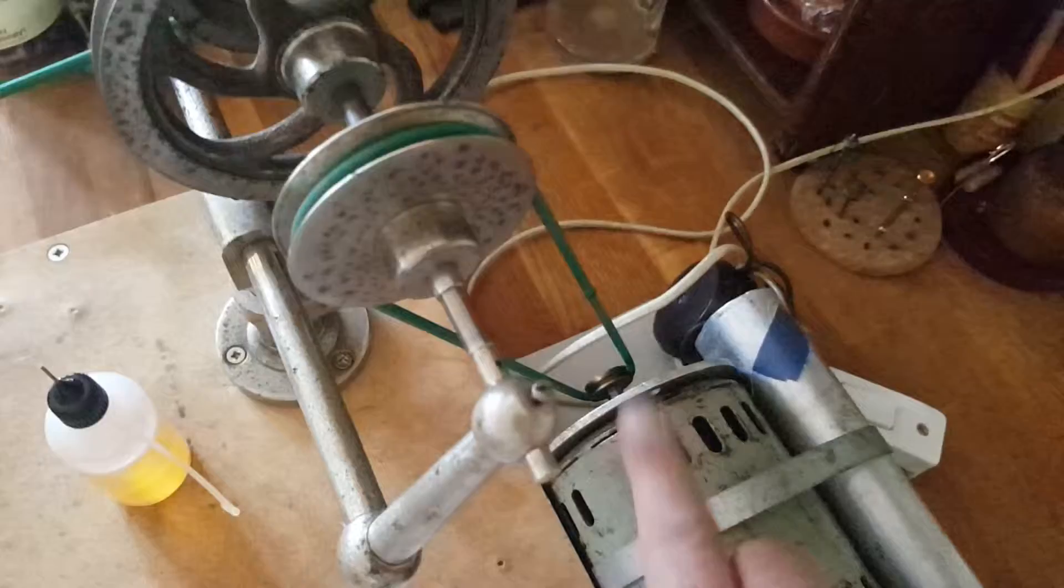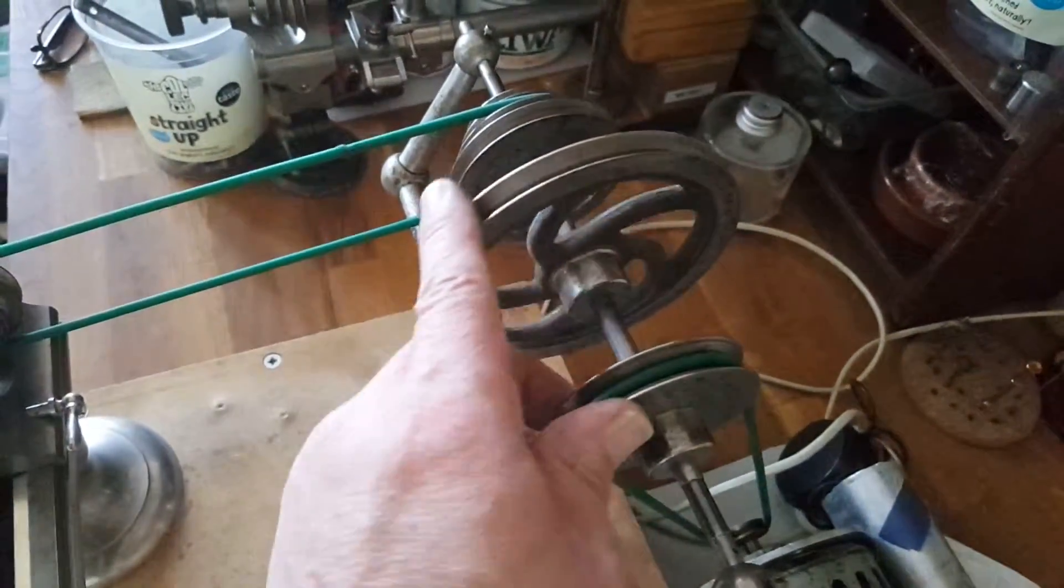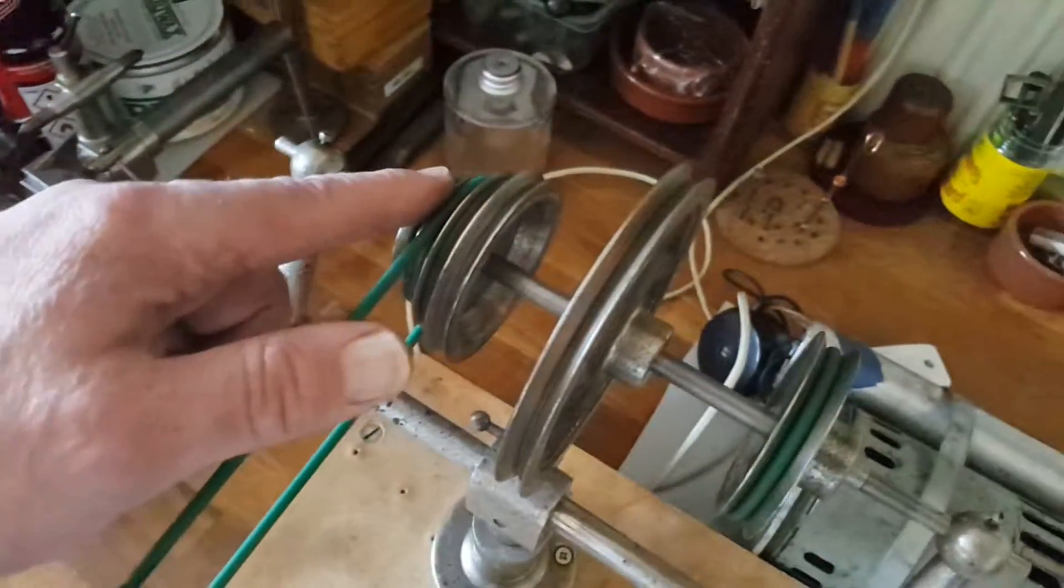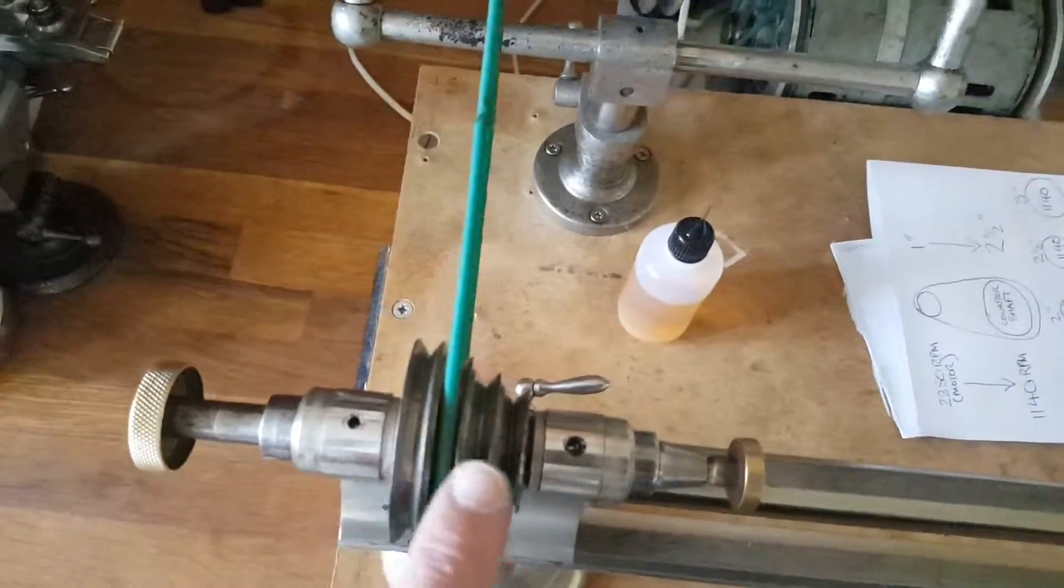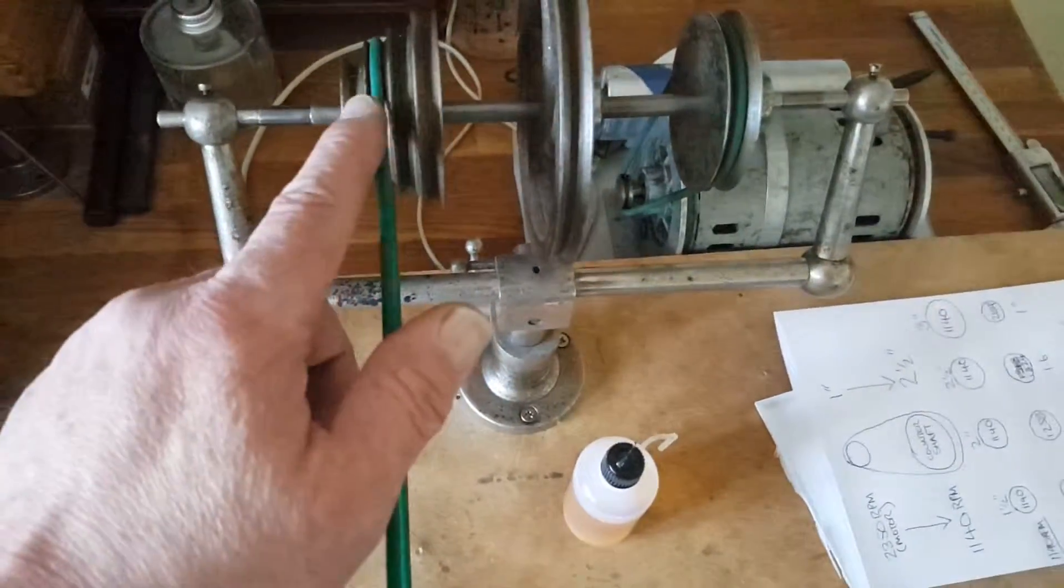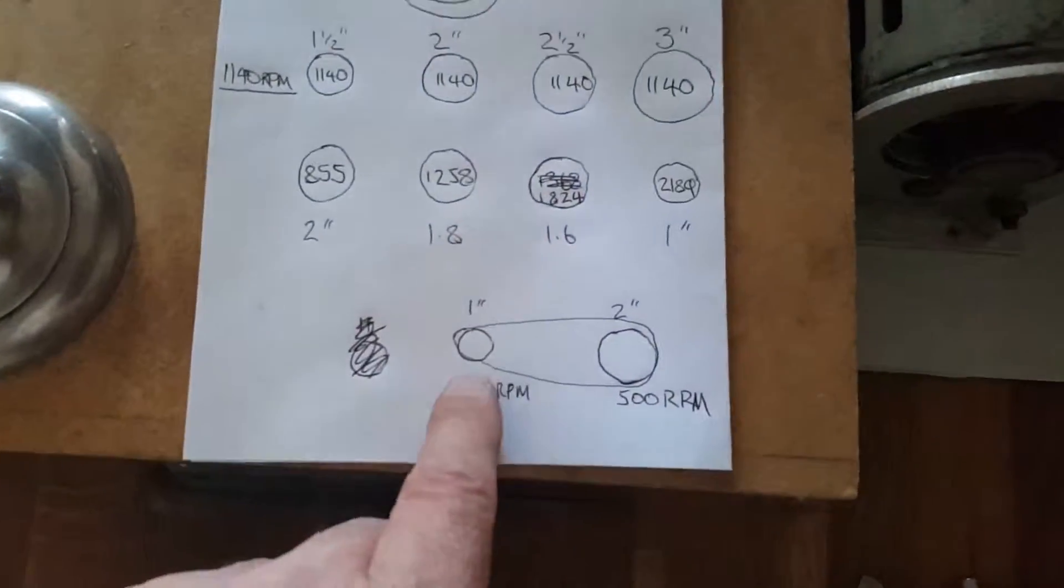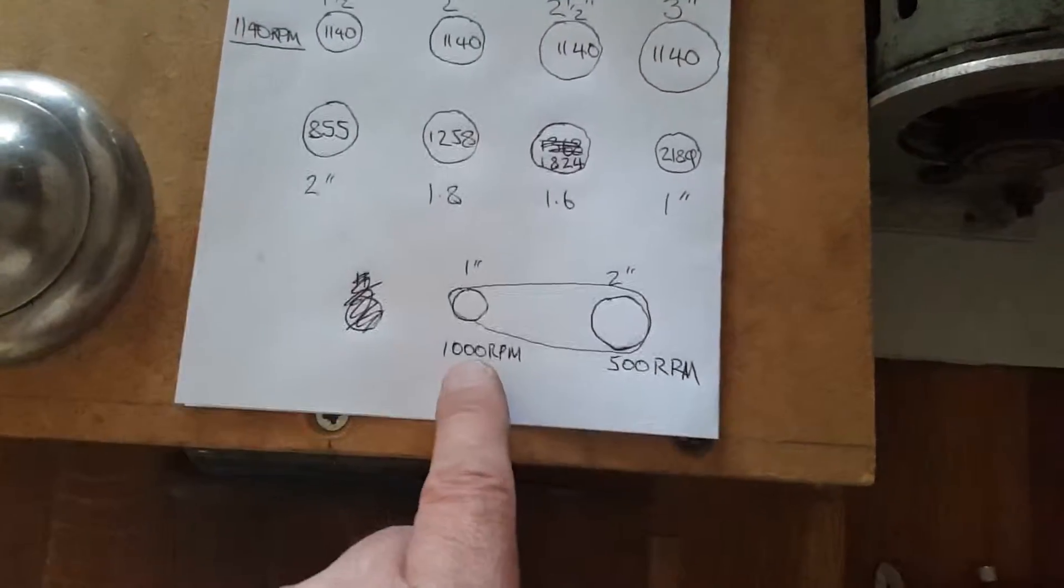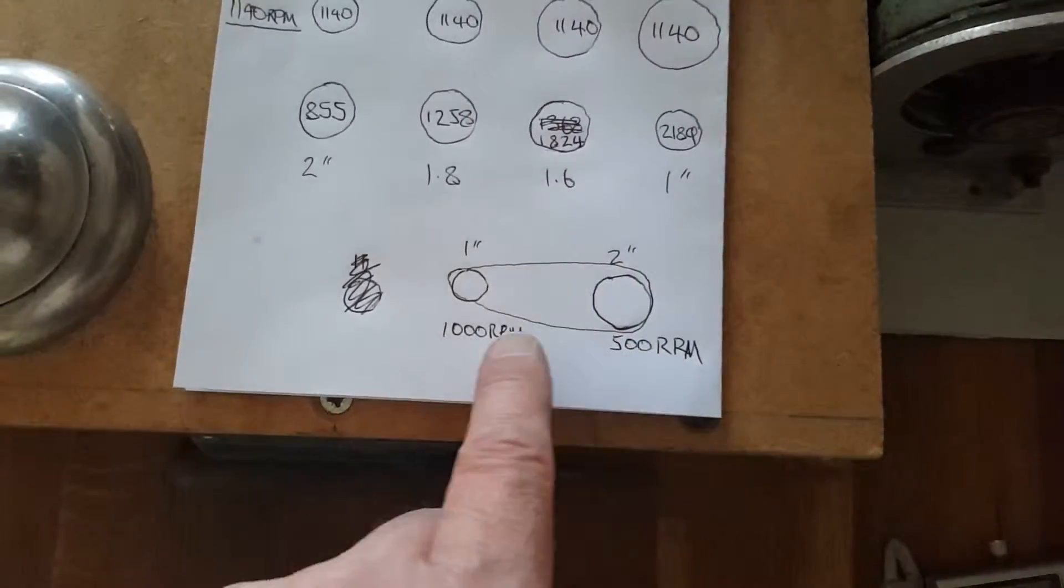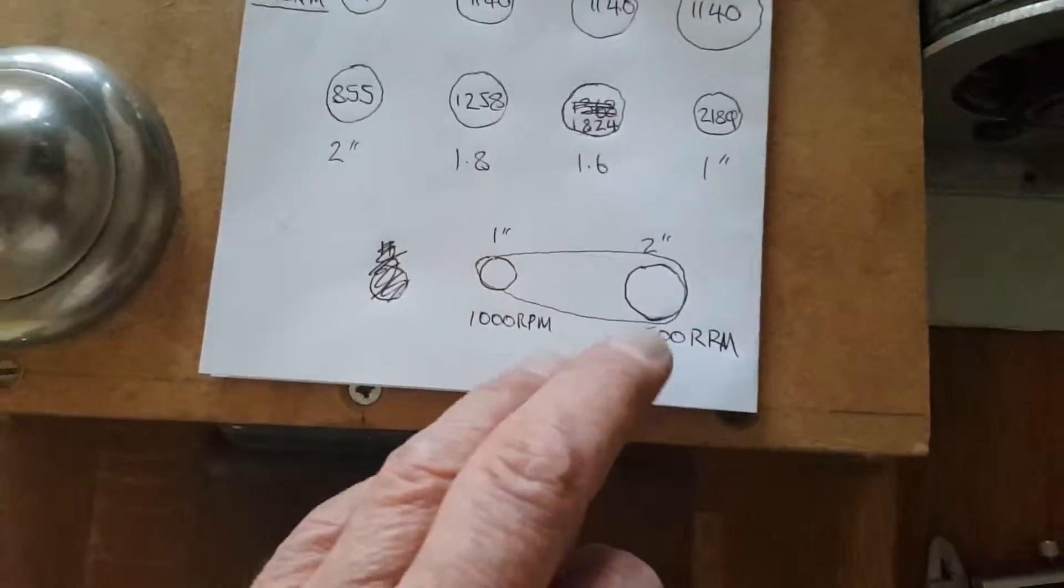So once this motor is now running this counter shaft at 1140 RPM, whatever we set these pulleys here onto the pulley of the headstock, if it is a smaller pulley to a bigger one, then what we're going to do is we're going to decrease the speed. So if we've got a 1 inch pulley to a 2 inch pulley, it reduces by half because the gear ratio is 1 to 2.